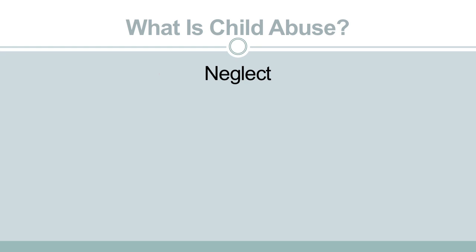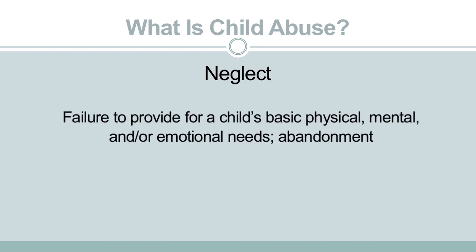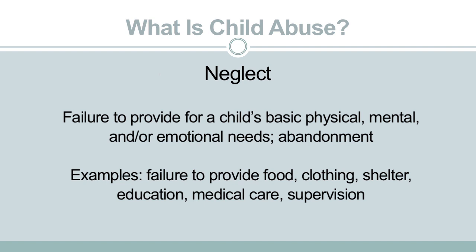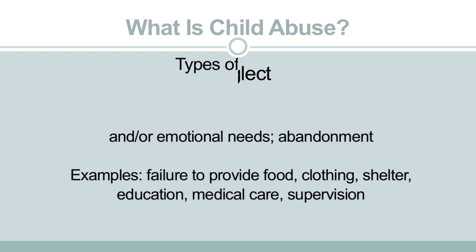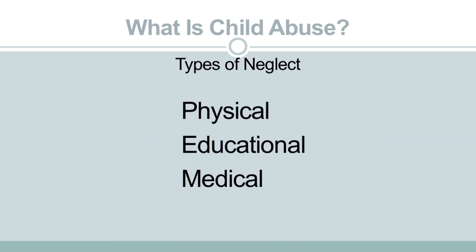Neglect, the most common form of child abuse, is defined as a failure to provide for a child's basic physical, mental, and/or emotional needs. This includes abandonment. Examples of neglect include the failure to provide adequate food, clothing, shelter, education, medical care, and supervision. There are several types of neglect: physical, educational, medical, and emotional.